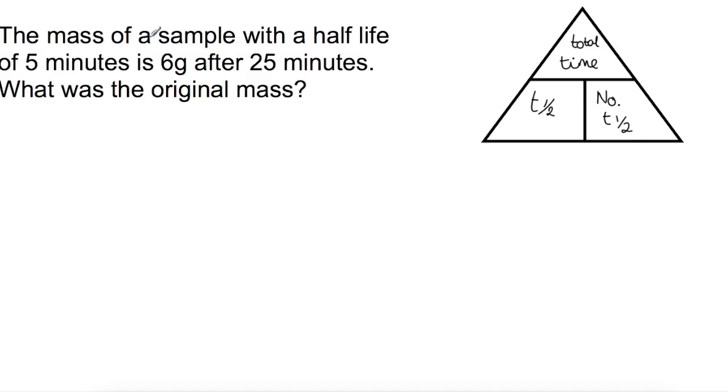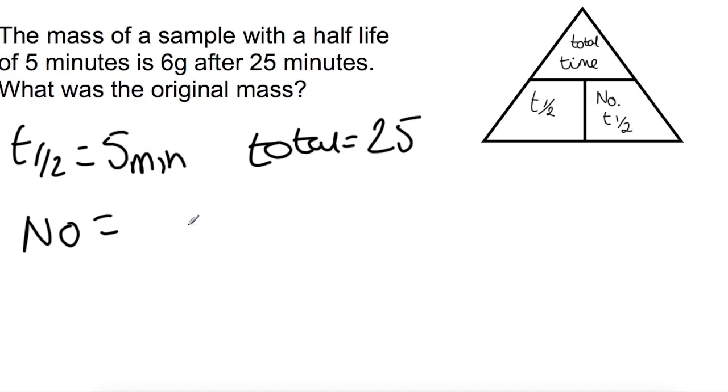In our final example, we're looking at mass. So we have an isotope with a half-life of 5 minutes. We have a total time of 25 minutes, and we're looking for the original mass. So we need to find out how many half-lives we have. So we have 25 minutes as our total. Each half-life is 5 minutes, so we have 5 half-lives in that time.